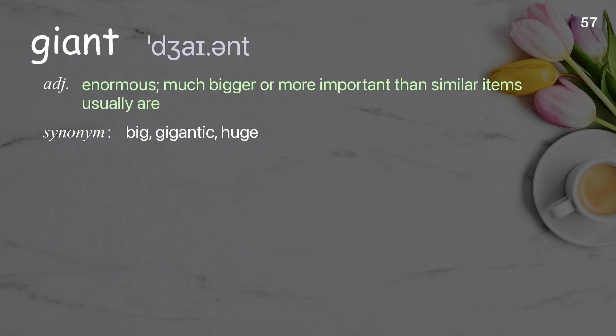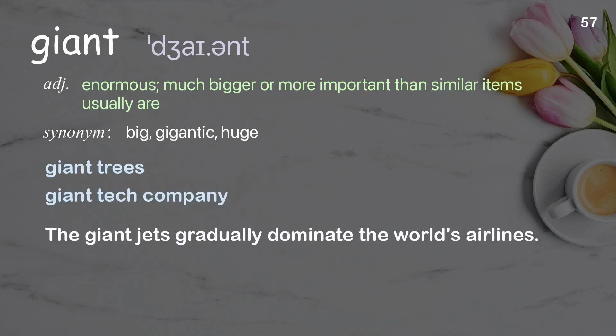Giant — extremely big, much bigger or more important than similar items usually are. Examples: giant trees, giant tech company. The giant jets that gradually dominate the world's airlines.